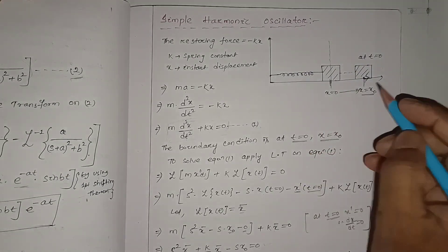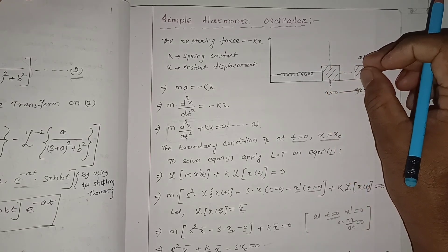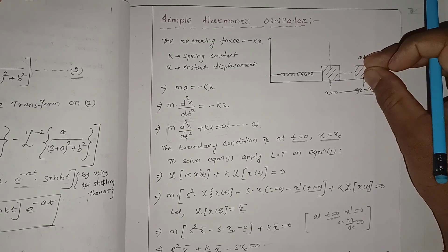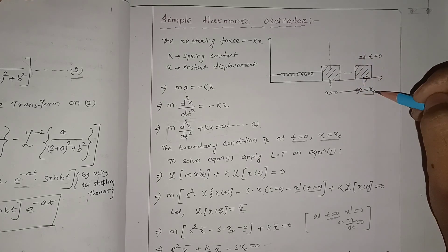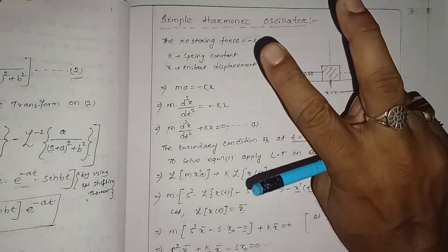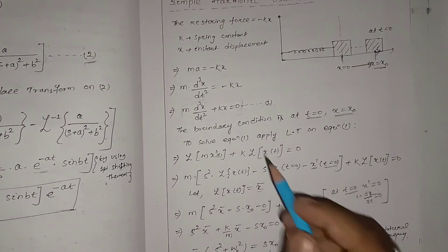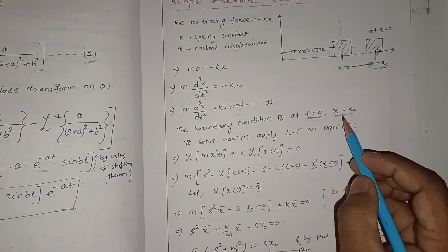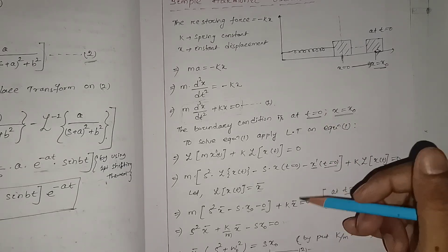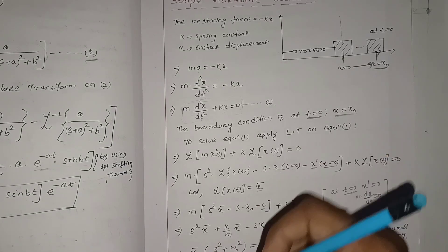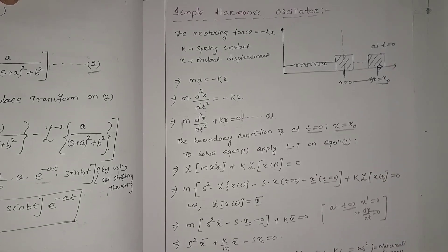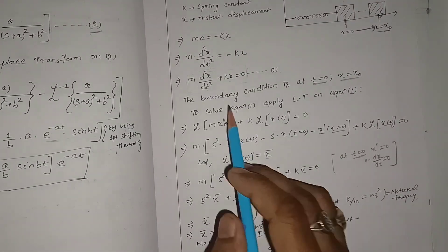At t = 0, the displacement is x₀ and the velocity is zero — I simply dragged the body to that distance and held it at rest. So the two boundary conditions are: at t = 0, x = x₀, and at t = 0, the velocity dx/dt = 0. These are the two boundary conditions we must apply when solving this differential equation using the Laplace transform.